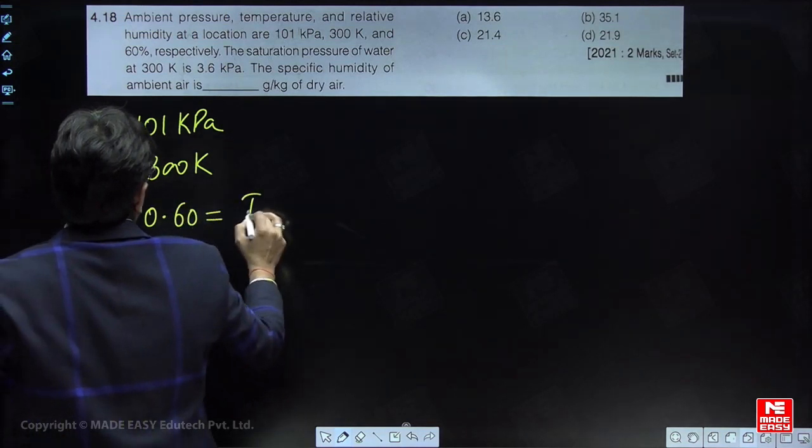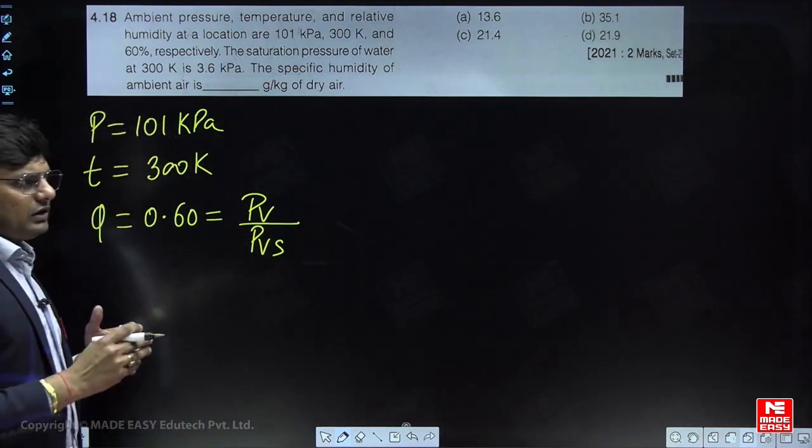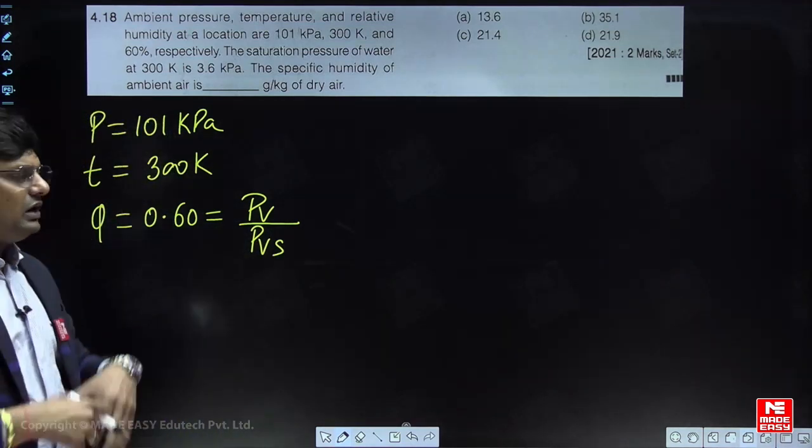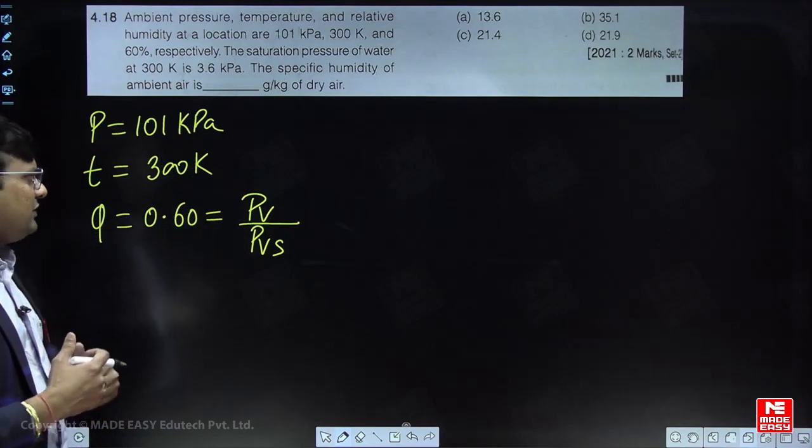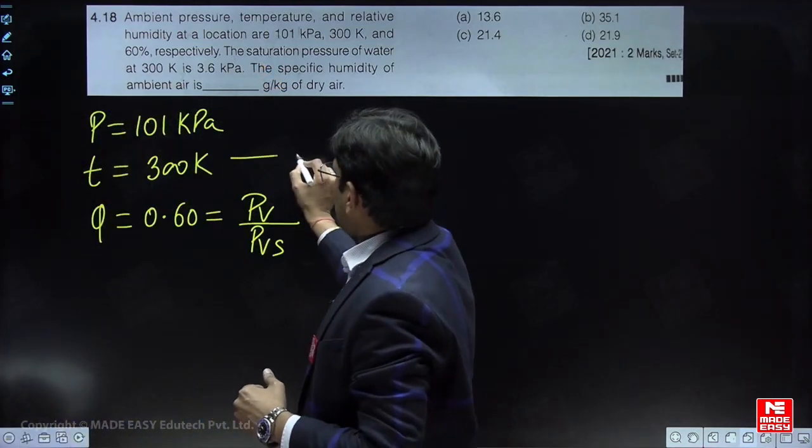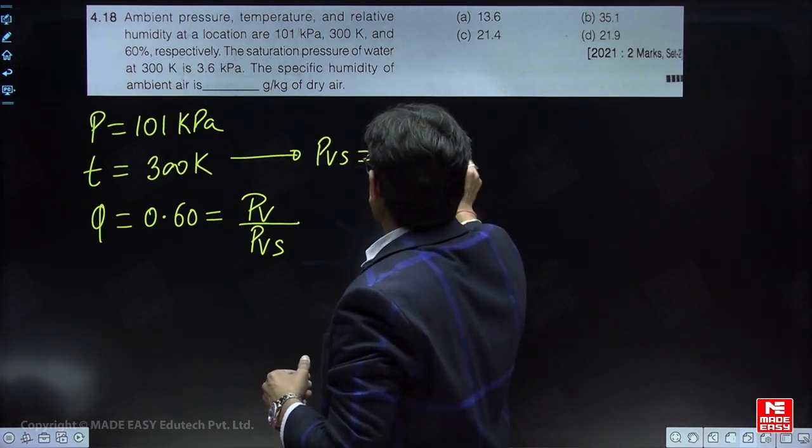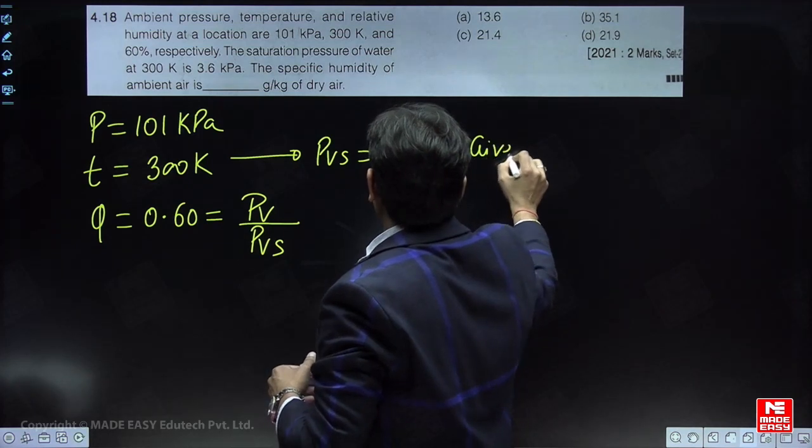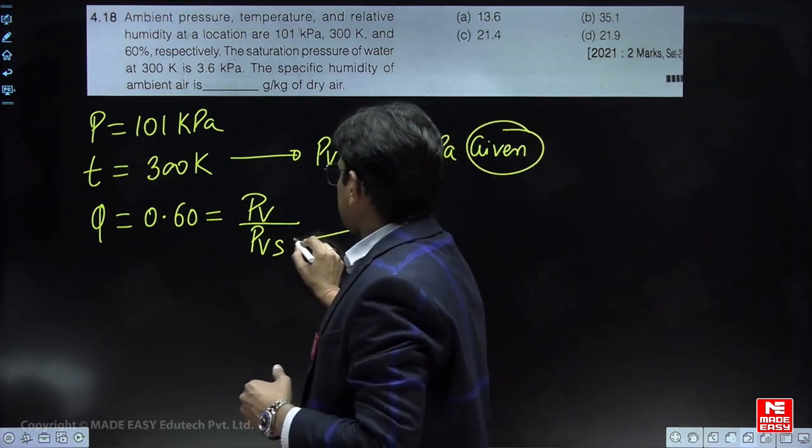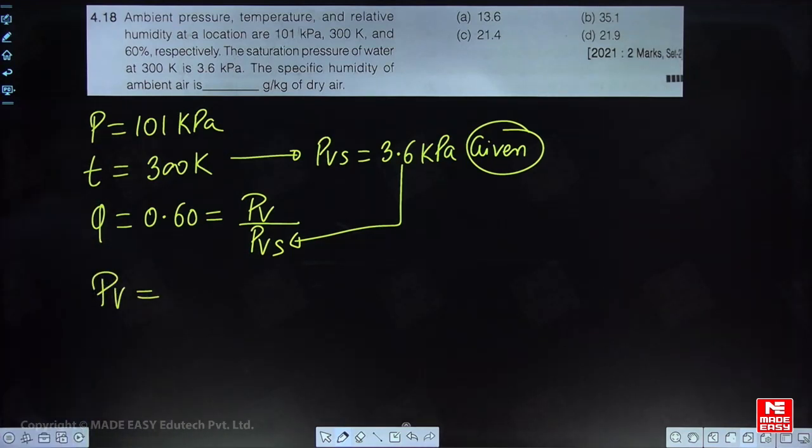What is relative humidity? It is defined as the ratio of mass of water vapor to the mass of water vapor under saturated condition, and that is also equal to PV upon PVS. The saturation pressure corresponding to the dry bulb temperature is given as 3.6 kilopascal. You can use this concept here, so from this you will get the value of PV as 2.16 kilopascal.